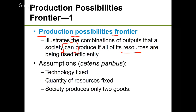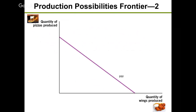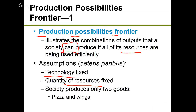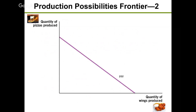A couple of assumptions for the PPF: first, we have fixed technology — technology doesn't change. Our resources are fixed — fixed number of workers, lumber, electricity, water, and so on. Also, our society can only produce two goods. Because of this trade-off, when you produce one good you must give up the other. In our example, the two goods are pizza and wings.